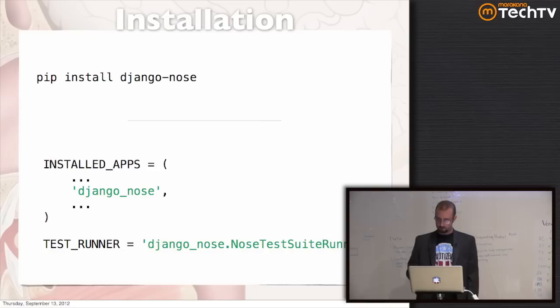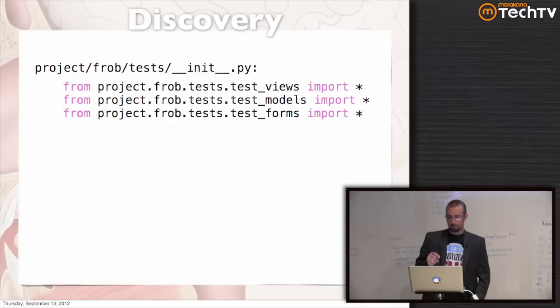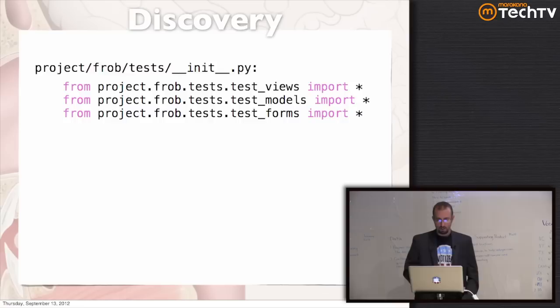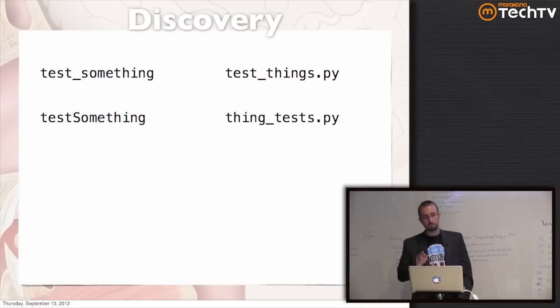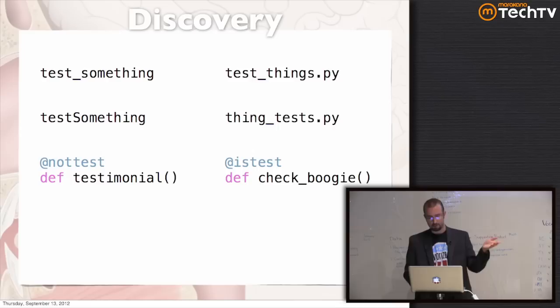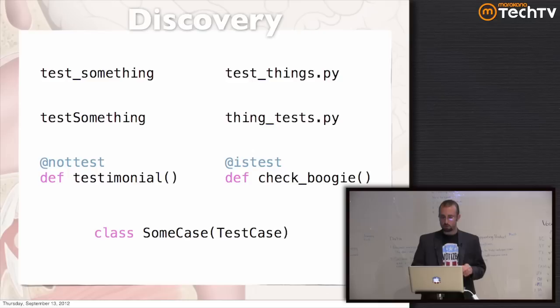First of all, we have discovery. The stock Django test runner makes you pull everything into tests/__init__.py or tests.py. Nose, on the other hand, makes all of that go away. Instead, Nose finds your tests by name — if it finds a class or a function with a test-like name inside a module with a test-like name, it considers that to be a test. You can also use a decorator to explicitly say whether something is or isn't a test. Subclasses of unittest.TestCase are always considered tests, so all your old Django tests continue to be found, recognized, and run.